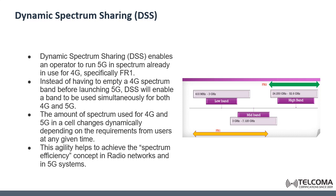One of the technologies used in the 5G new radio is dynamic spectrum sharing, or DSS. Dynamic spectrum sharing means that the operator uses the same spectrum bands for different radio access technologies. This will enable the 5G new radio and LTE or 4G to share the same frequency range — specifically frequency range one, which starts at 410 MHz up to 7125 MHz.